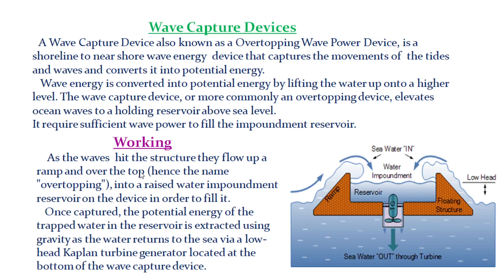As the waves hit the structure, they flow up a ramp and over the top into a raised water impoundment reservoir in order to fill it. Once captured, the potential energy of the trapped water in the reservoir is extracted using gravity as the water returns to the sea via a low-head Kaplan turbine generator located at the bottom of the wave capture device.